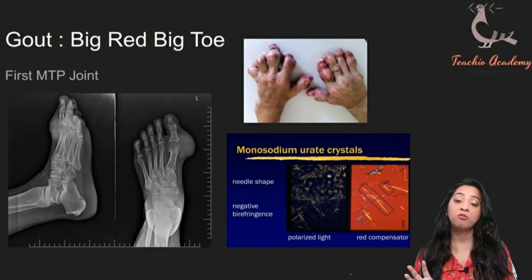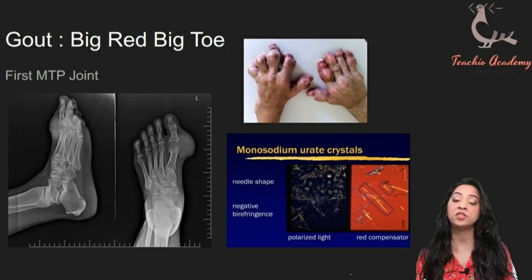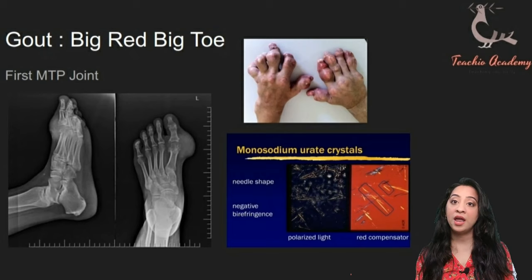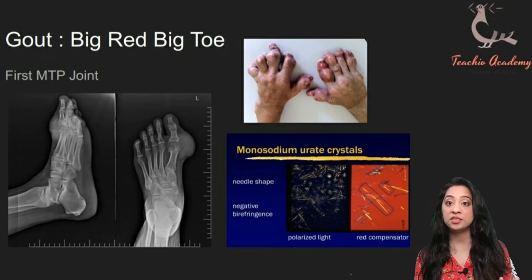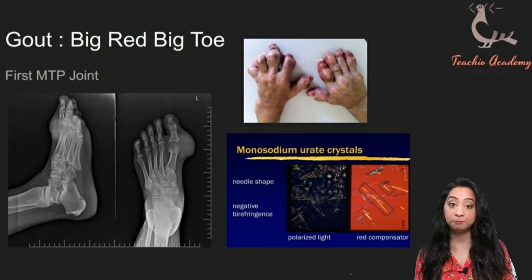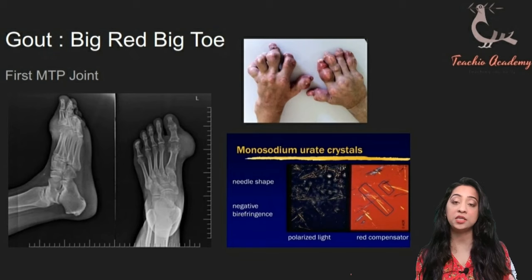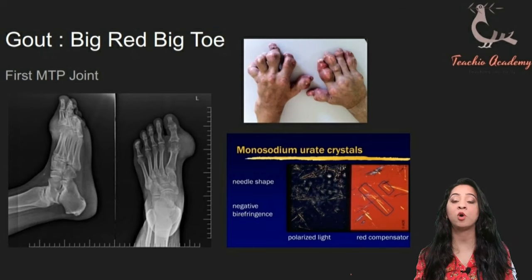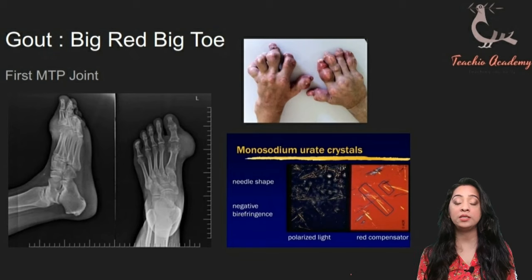Moving on to gout. The earliest description of gout was 'as if the devil was biting your toe' — patients often wake up with a very hot, red, swollen toe, which is the classical descriptor on your PLAB 1 exam. The main joint affected, as seen on the x-ray, is the first metatarsophalangeal joint — essentially the big toe joint. Unlike other types of arthritis, patients usually present in discrete attacks or flare-ups of acutely swollen joints.